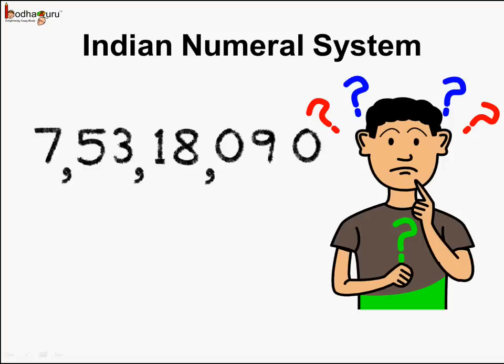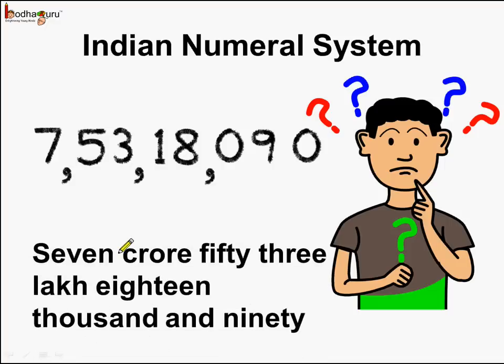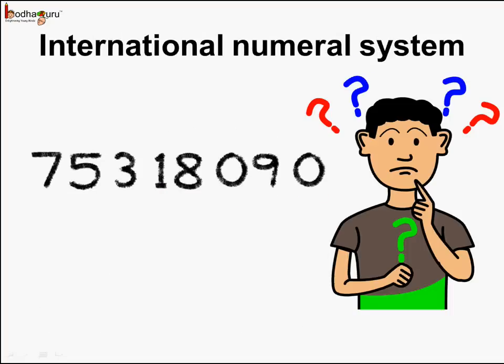And how do we read it? It is equal to seven crores, fifty-three lakh, eighteen thousand and ninety.